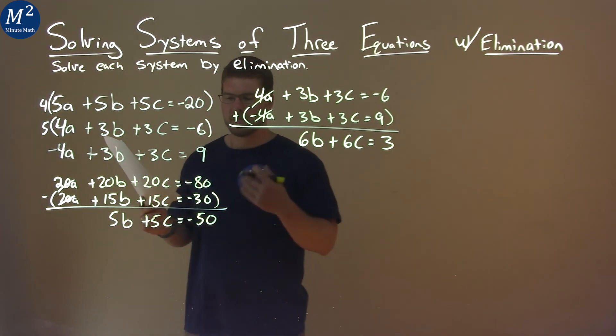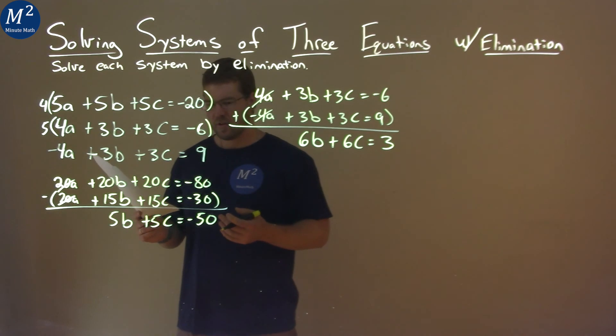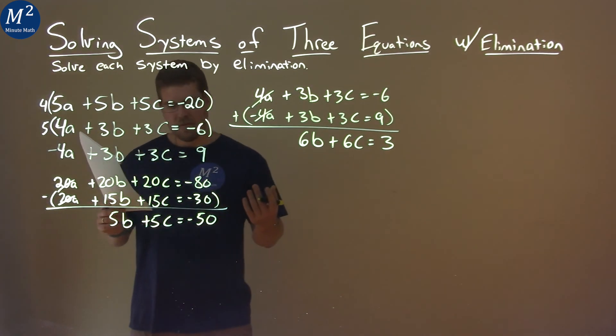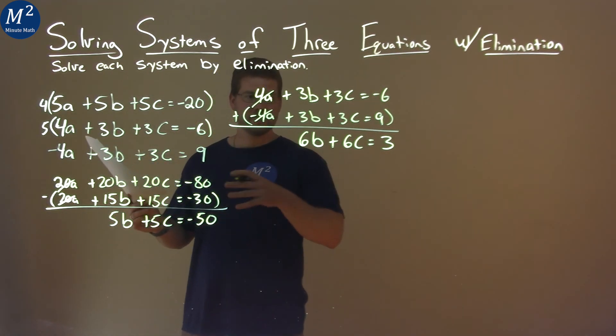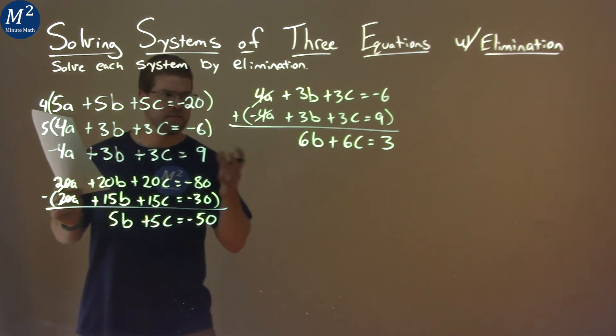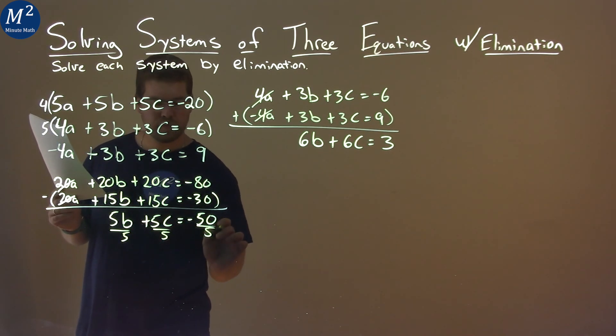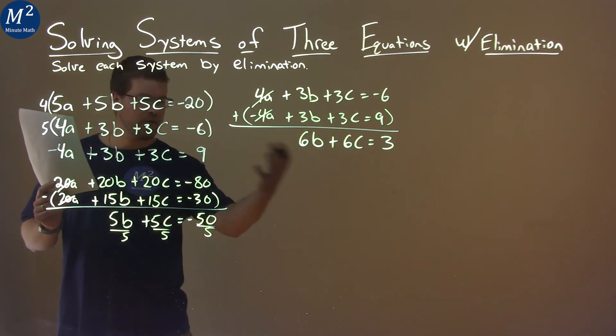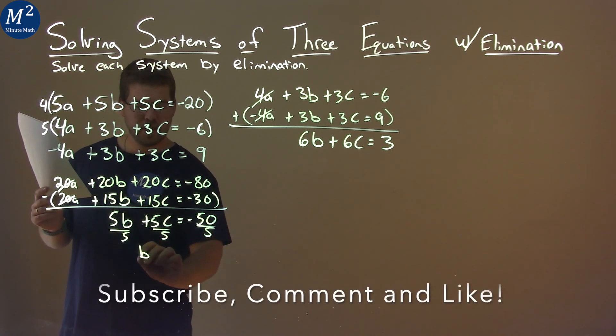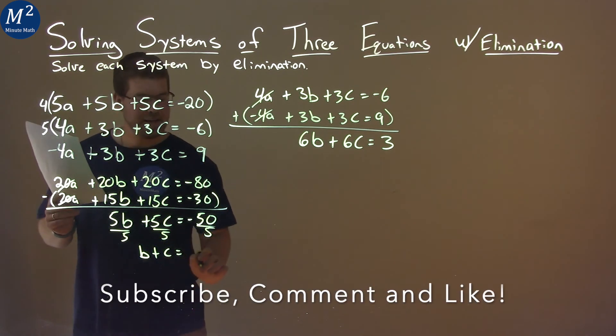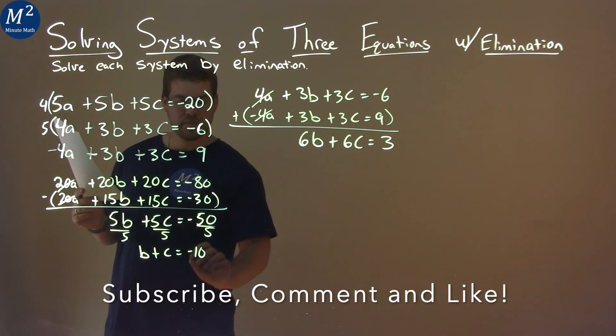And we want to bring them together to see if we can eliminate something. We can either multiply it by a value or divide by something and see if we get the variables to cancel. If I divide, actually, this whole thing by 5 here, I'm left with, right, I can divide the whole thing by 5, b plus c equals negative 10. Great.